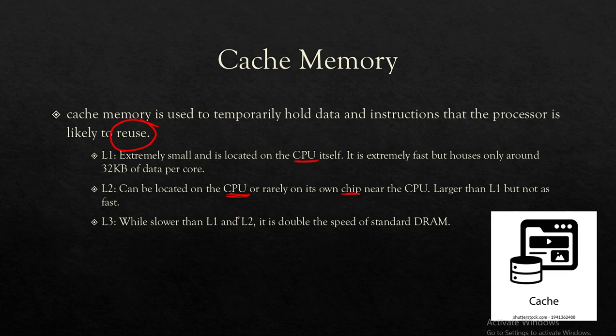L3 cache memory is also outside the CPU. L3 cache memory is slower, L2 cache memory is medium speed, and L1 cache memory is the fastest.